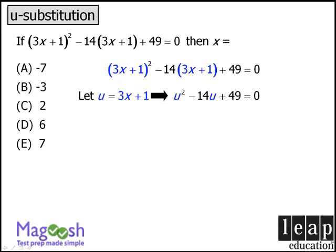Now we can solve this equation for u by first factoring the left-hand side. And now we can see that u minus 7 must equal 0. When we add 7 to both sides of our equation, we find that u equals 7.